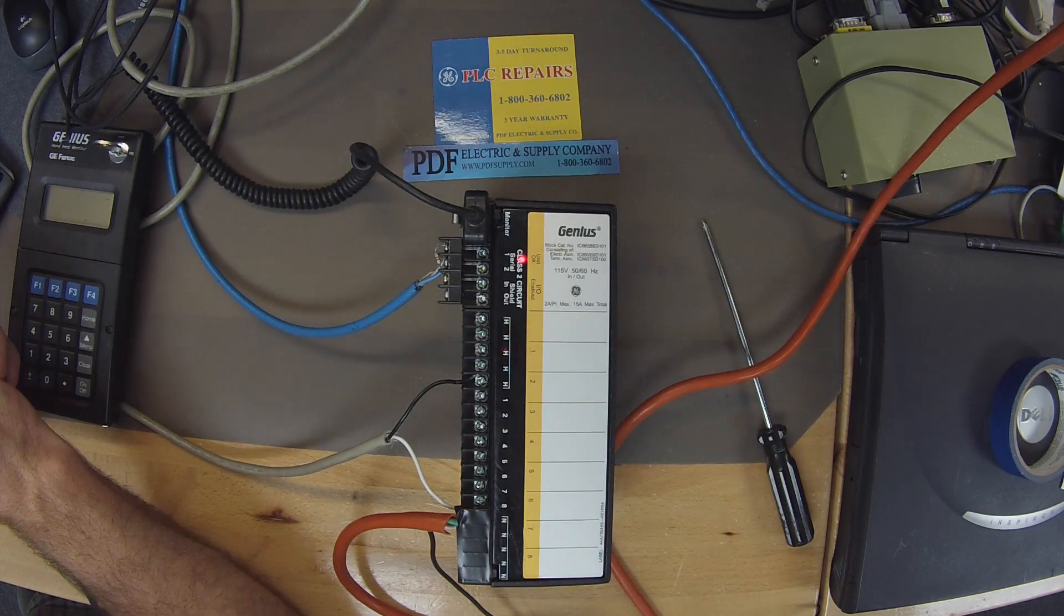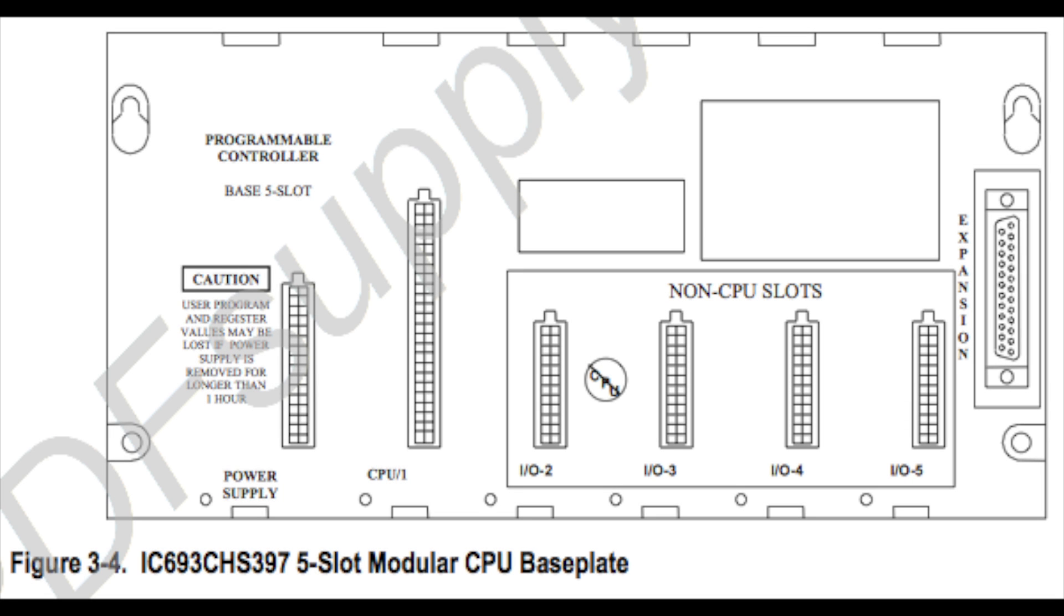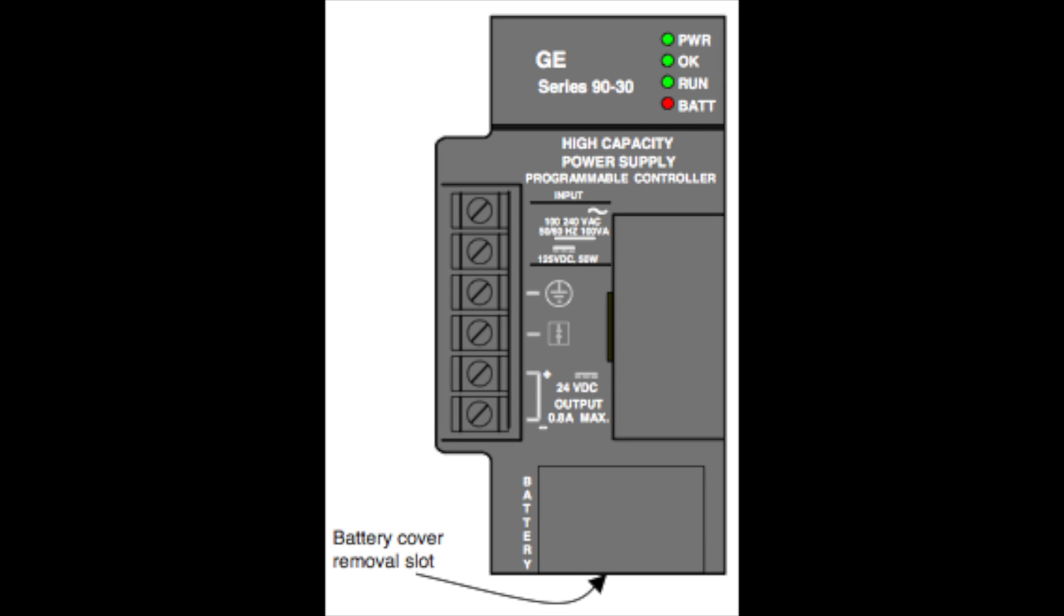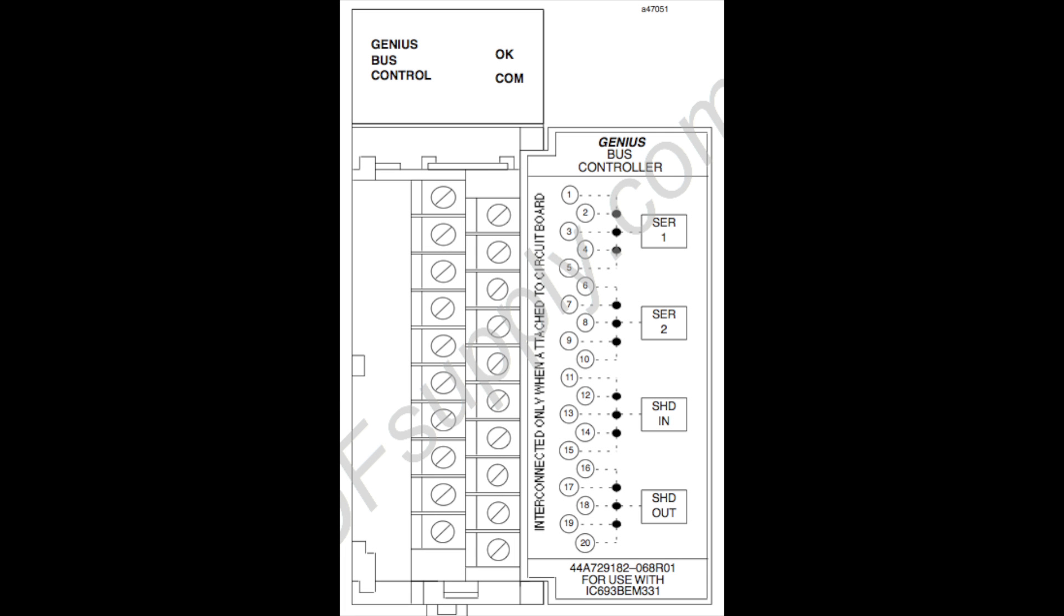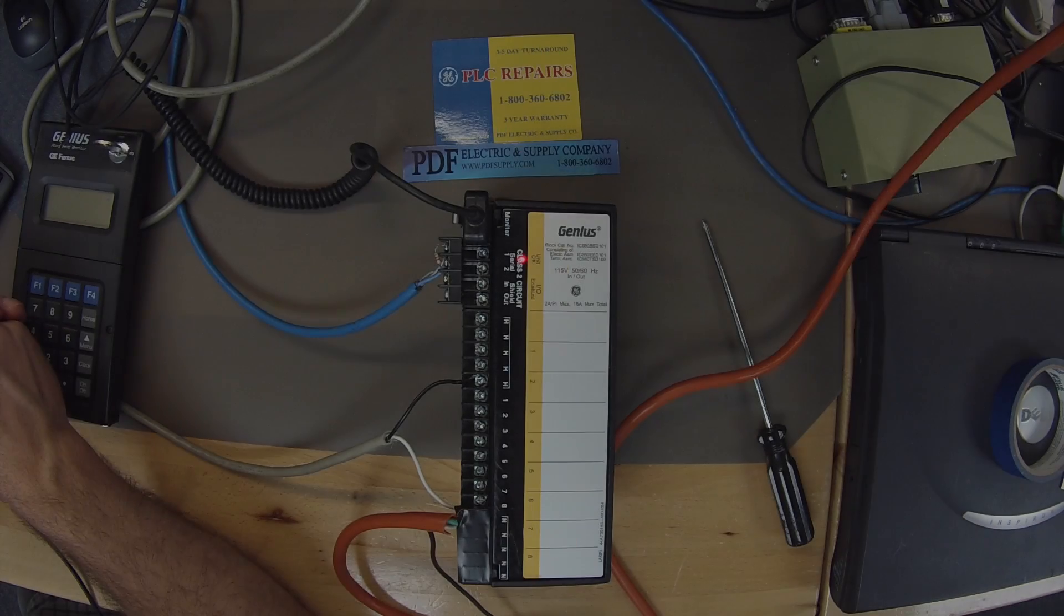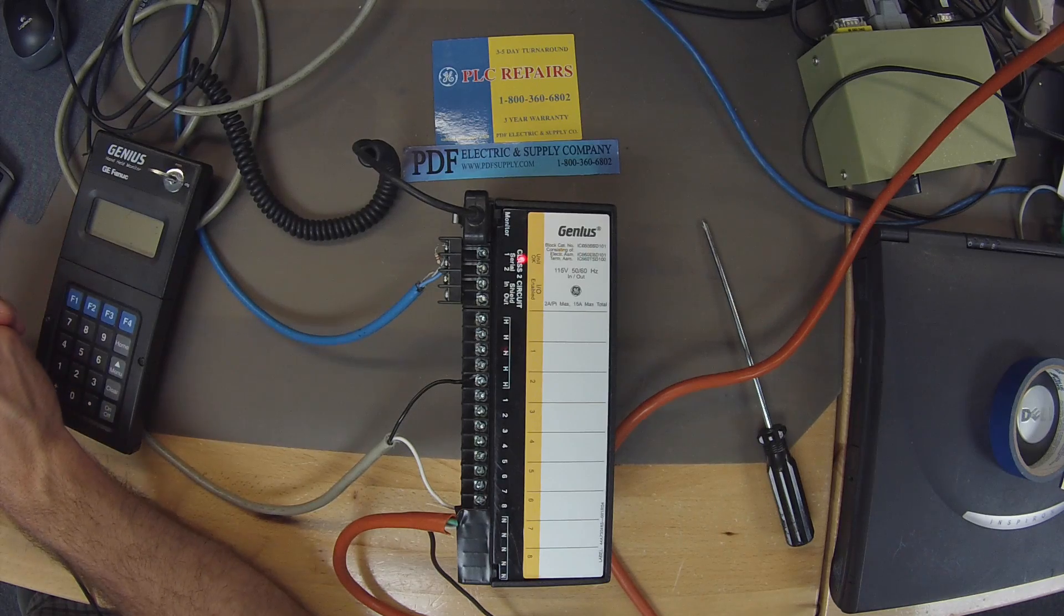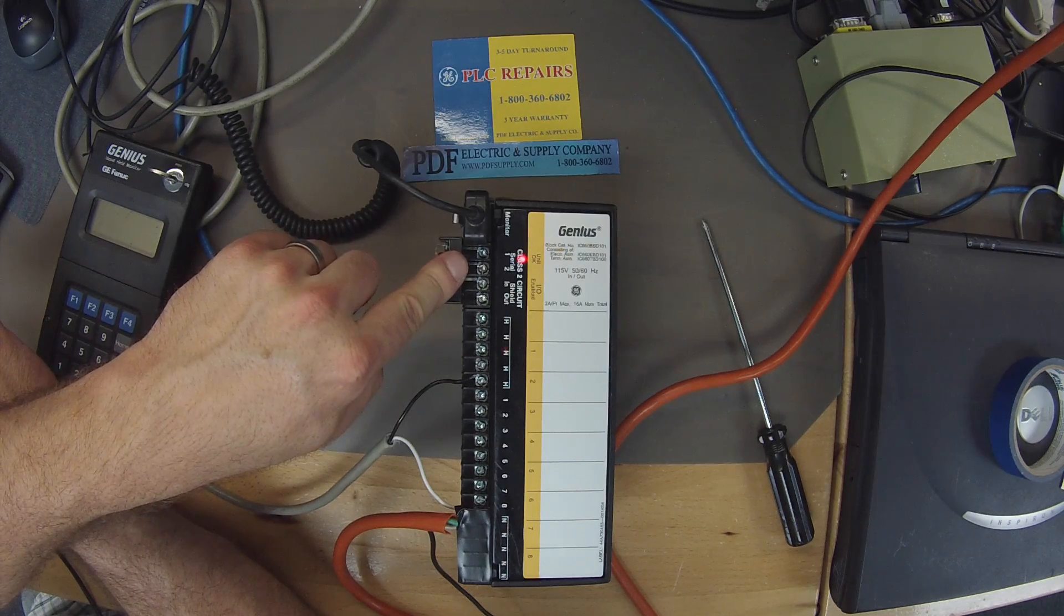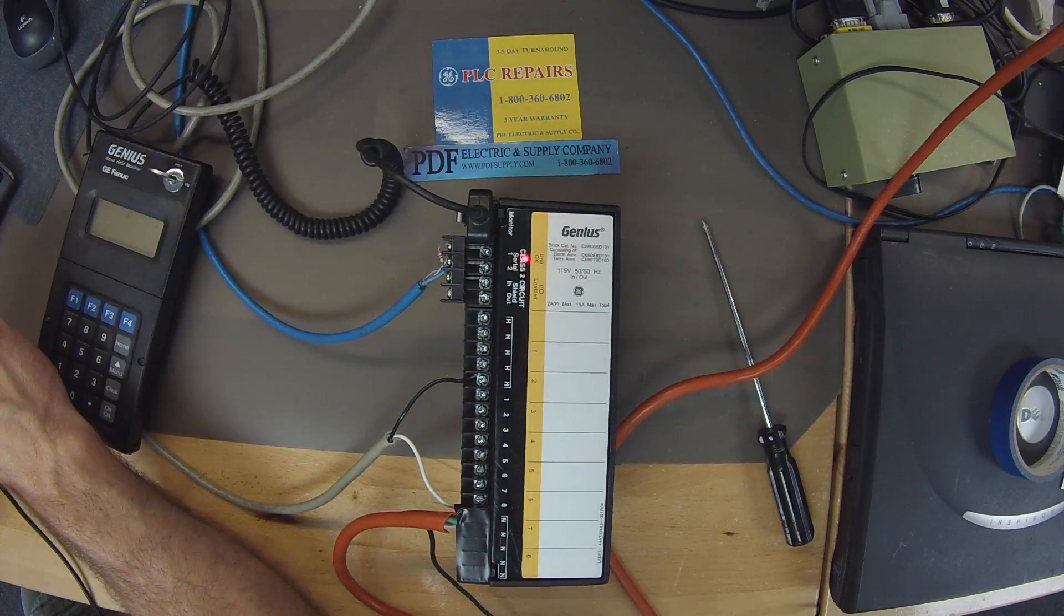Now what you can't see on the camera right now is that I have an IC693CHS3975 slot rack which is featuring a IC693PWR330 power supply and an IC693CPU374 plus processor and as I mentioned before the Genius Bus Controller. You can use different processors, different power supplies, it doesn't really matter but the reason that I have this set up is because we're also going to be using Proficy Machine Edition to make sure that the Genius Blocks function of the serial port is working between the software and the processor.